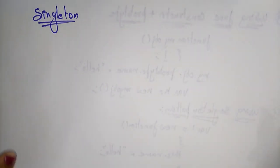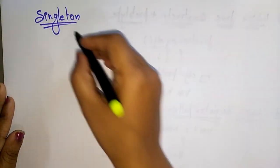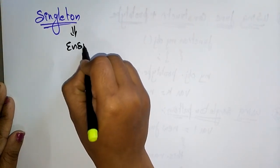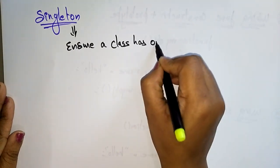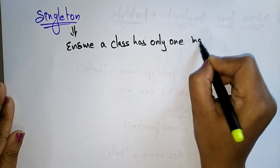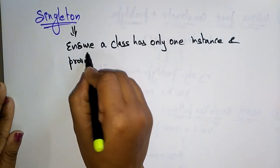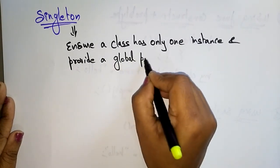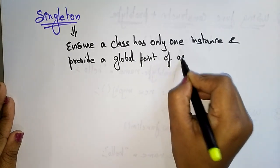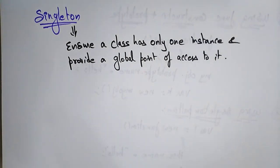Let's move on to the next topic: Singleton. A Singleton ensures a class has only one instance and provides a global point of access to it. It is frequently used in JavaScript.